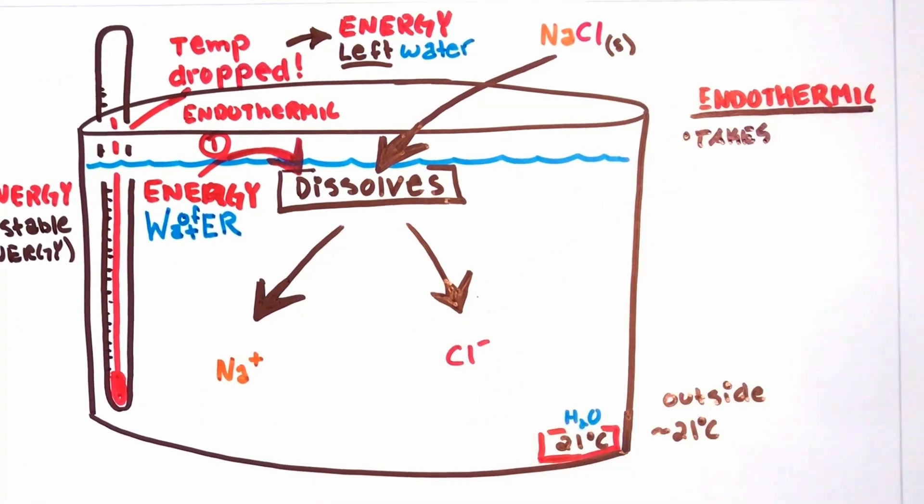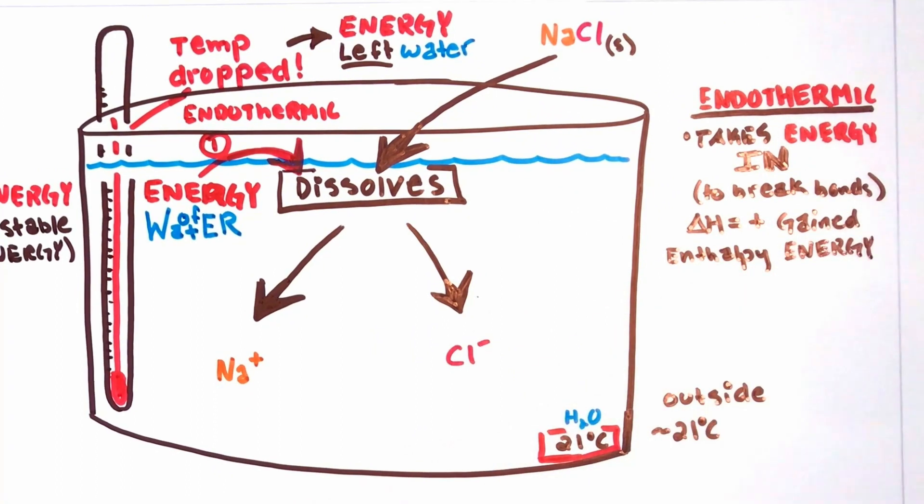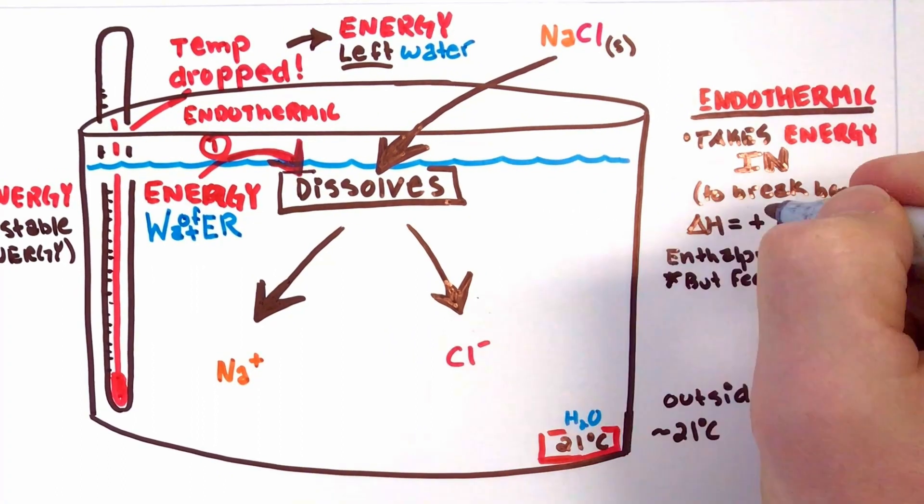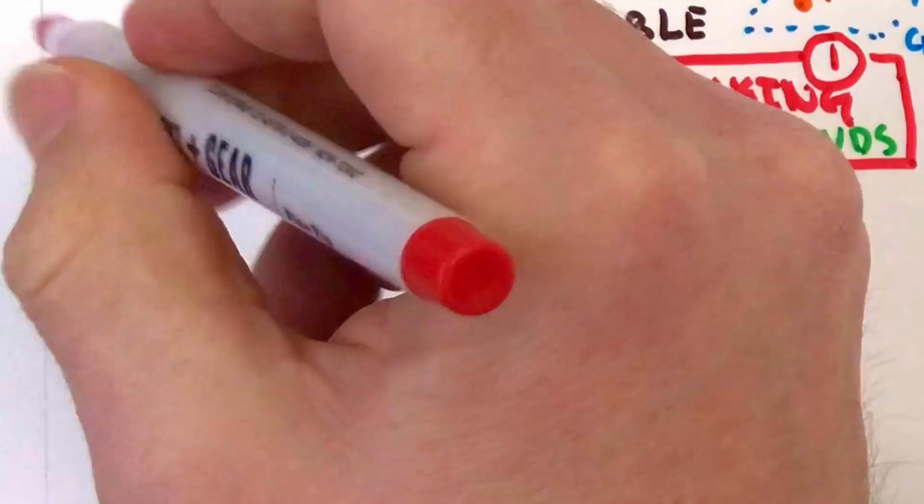We can show a positive enthalpy for the salt or delta H to signify the salt gained energy, but the water lost energy, so it feels cold. On a graph, we could show that like this to signify it taking energy to split the salt with the water.